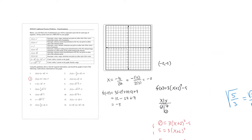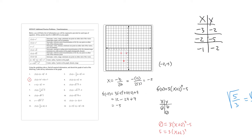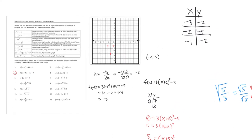We also need points on either side of the vertex (-2, -5). Trying x = -3: (-3 + 2) = -1, (-1)² = 1, 1×3 = 3, 3 - 5 = -2. By symmetry, x = -1 also gives y = -2. So the points (-3, -2) and (-1, -2) are on either side of the vertex. The y-intercept is (0, 7), and the range is [-5, ∞).